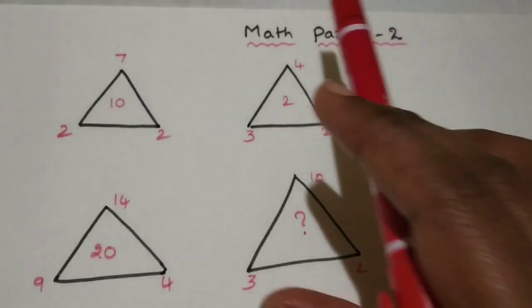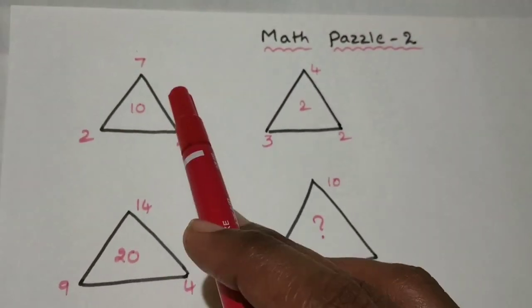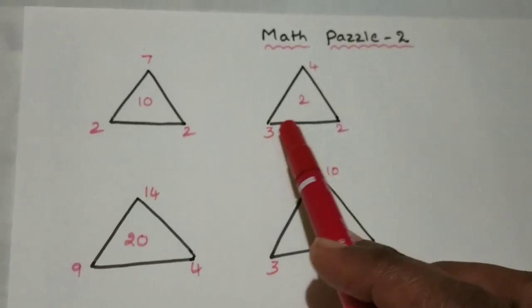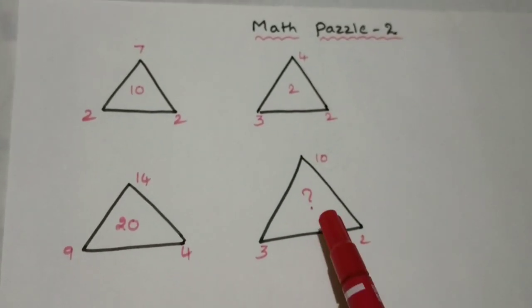And today's puzzle is triangle. They given 7, 2, 2, and the middle number 10. Like this 4 diagrams are there. You have to find this thing.